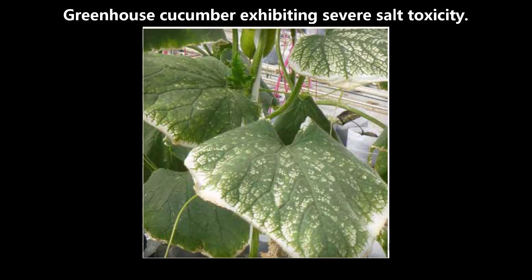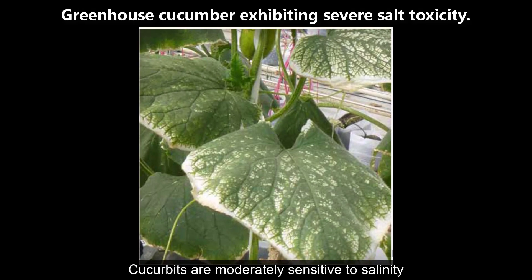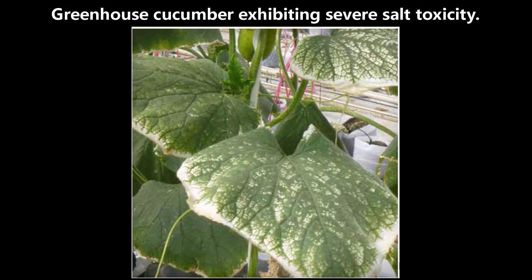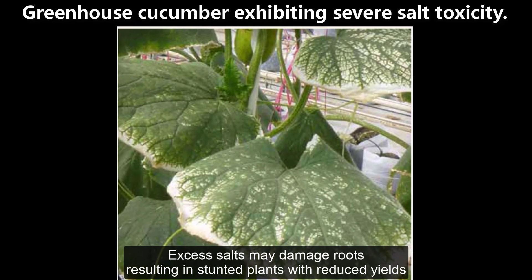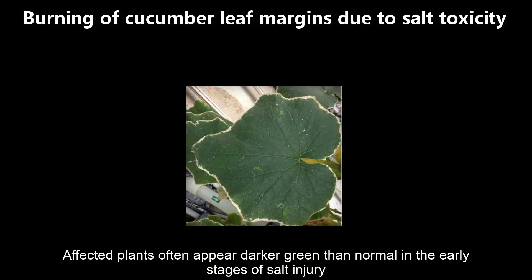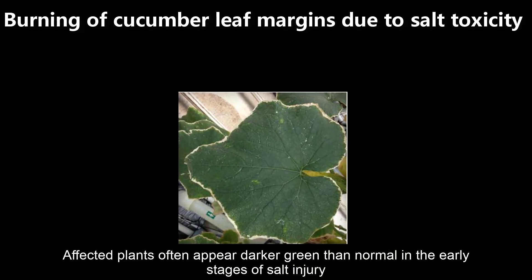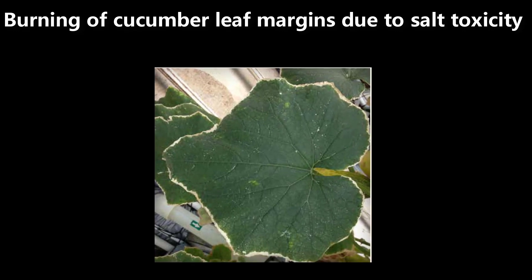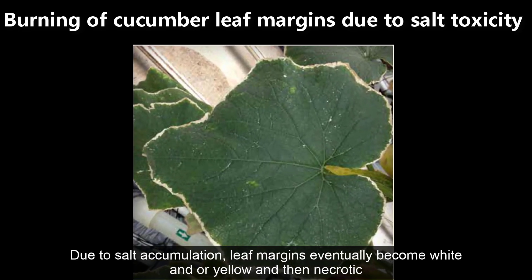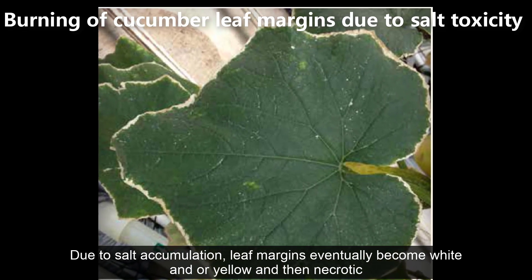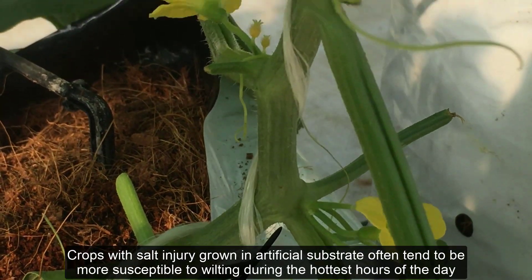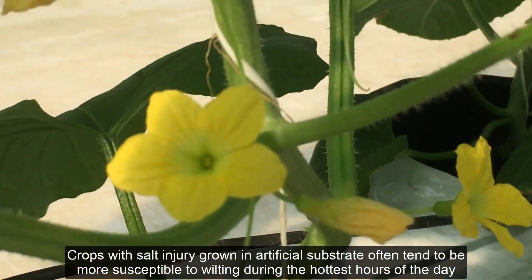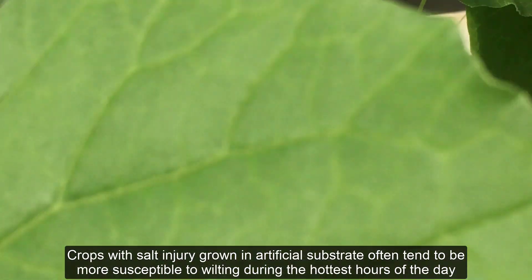Excessive soluble salts symptoms: cucurbits are moderately sensitive to salinity. Excess salts may damage roots, resulting in stunted plants with reduced yields. Affected plants often appear darker green than normal in the early stages of salt injury. Due to salt accumulation, leaf margins eventually become white and/or yellow and then necrotic. Crops with salt injury grown in artificial substrate often tend to be more susceptible to wilting during the hottest hours of the day, even when moisture level is sufficient.